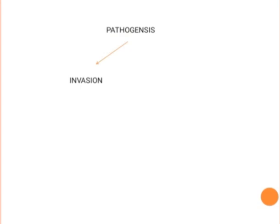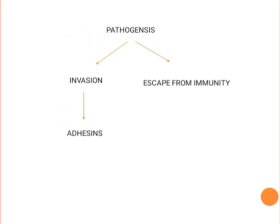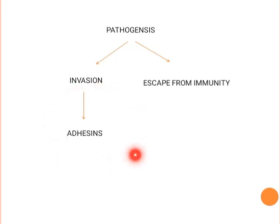After invasion, bacteria, viruses, or any microbe need to escape the immune system to cause disease. Bacteria need to adhere using specific structures known as adhesins — in case of bacteria, pili serve as adhesins. So bacteria invade, adhere, and then must escape immunity.